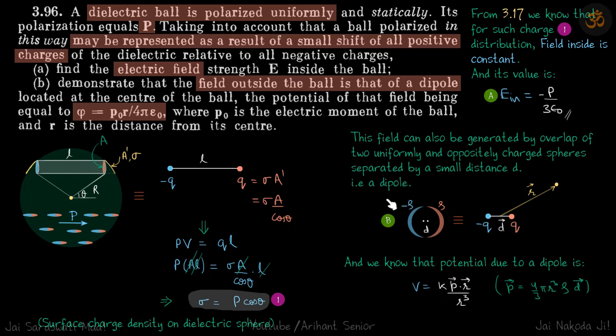So you have some neutral charge, you shift the positive charge a little bit and you are going to get a similar configuration which you get by the overlap of two oppositely charged spheres. So the distance between both those spheres is going to be d then we can represent this as a dipole.